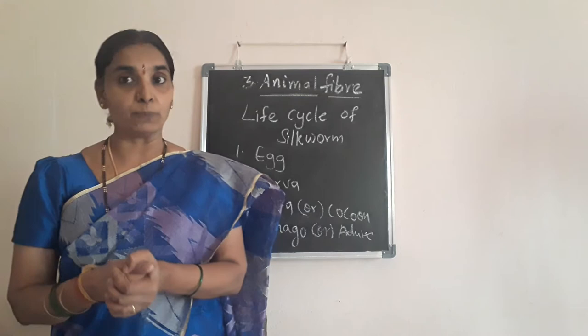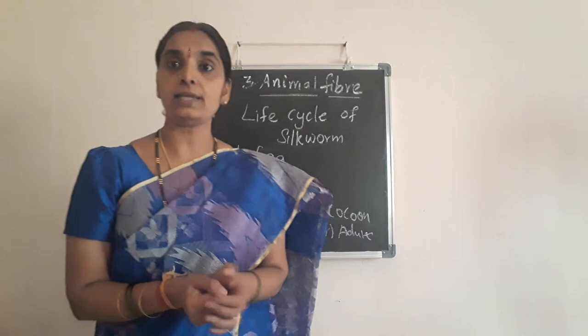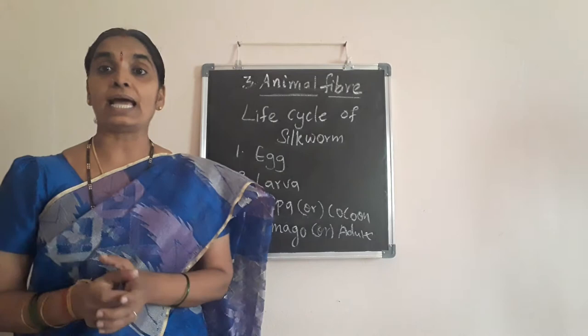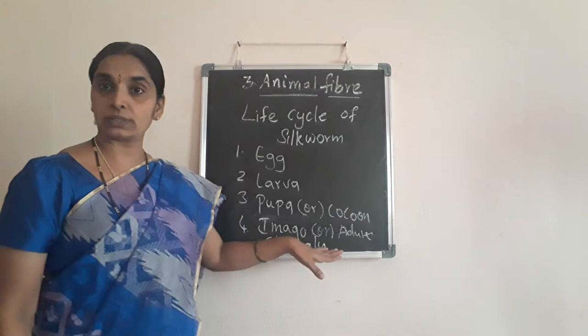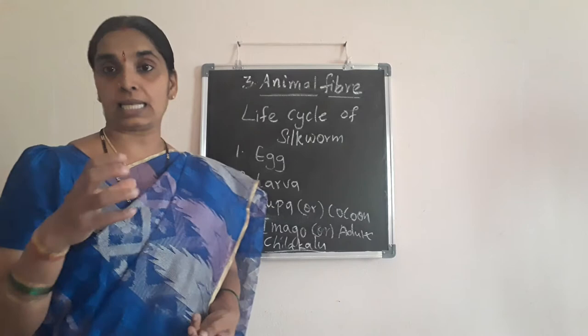In the local terminology, especially in our state, the silk moths from which we get the silk are known as Chilakaloo — C-H-I-L-A-K-A-N-U. The adult silkworms which are ready to lay eggs are called Chilakaloo.